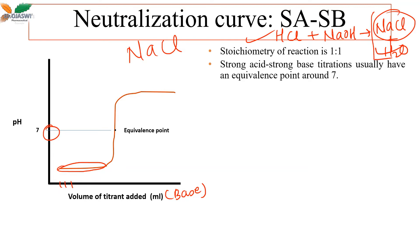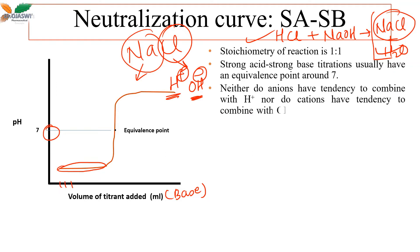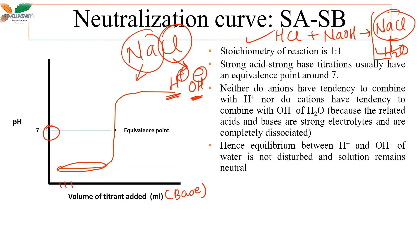The equivalence point is at pH 7 because the salt NaCl is neutral and water is the other product. Na⁺ comes from the strong base and Cl⁻ comes from the strong acid — both are completely dissociated and do not have a tendency to react further with H⁺ or OH⁻ from water. Therefore, the water equilibrium is not disturbed; neither anions combine with H⁺ nor cations combine with OH⁻, so the solution remains neutral.